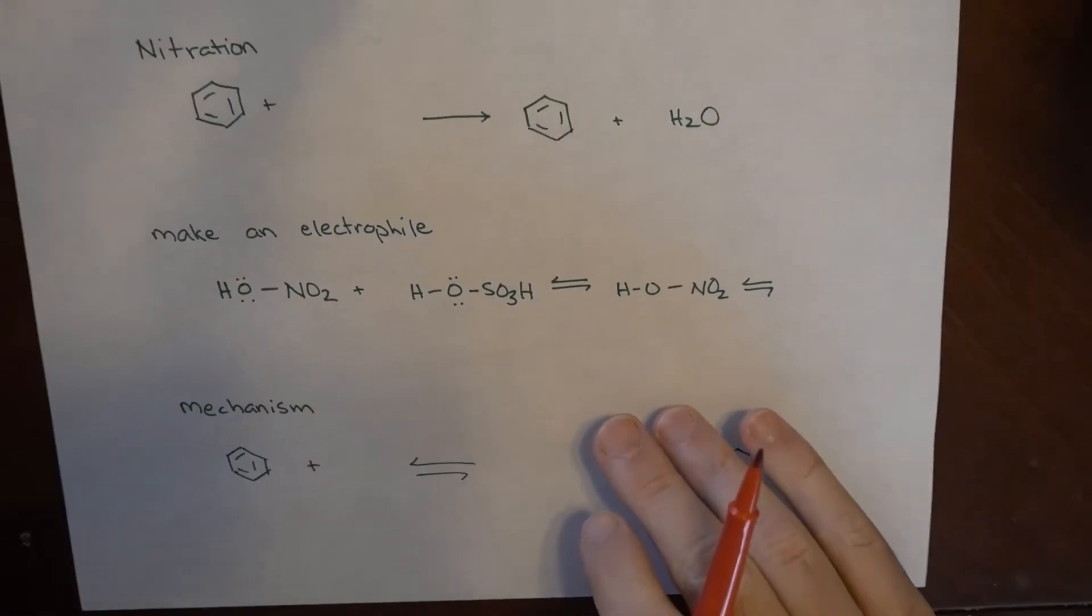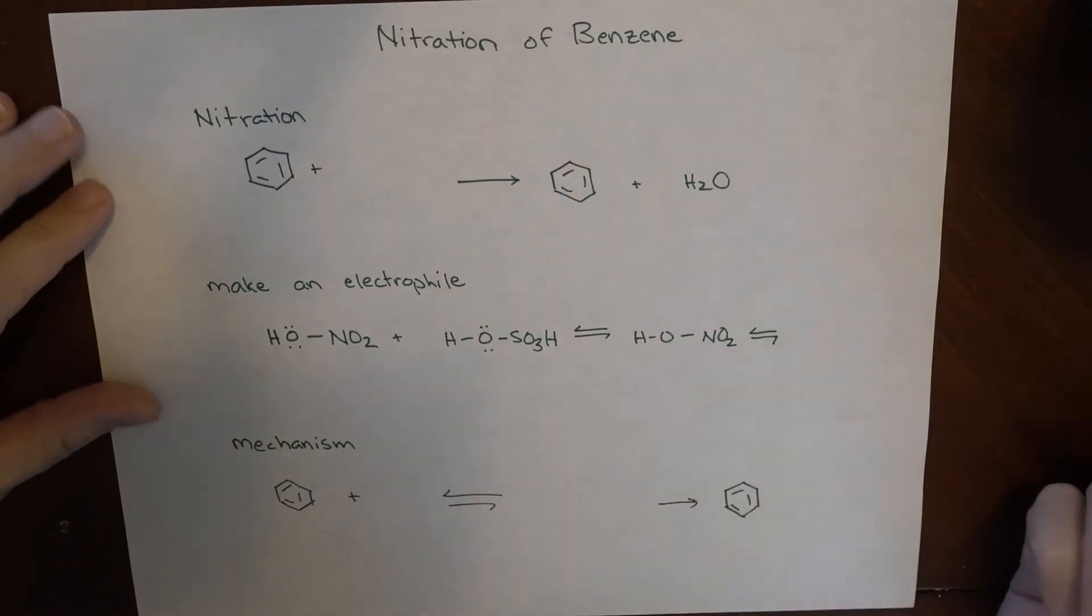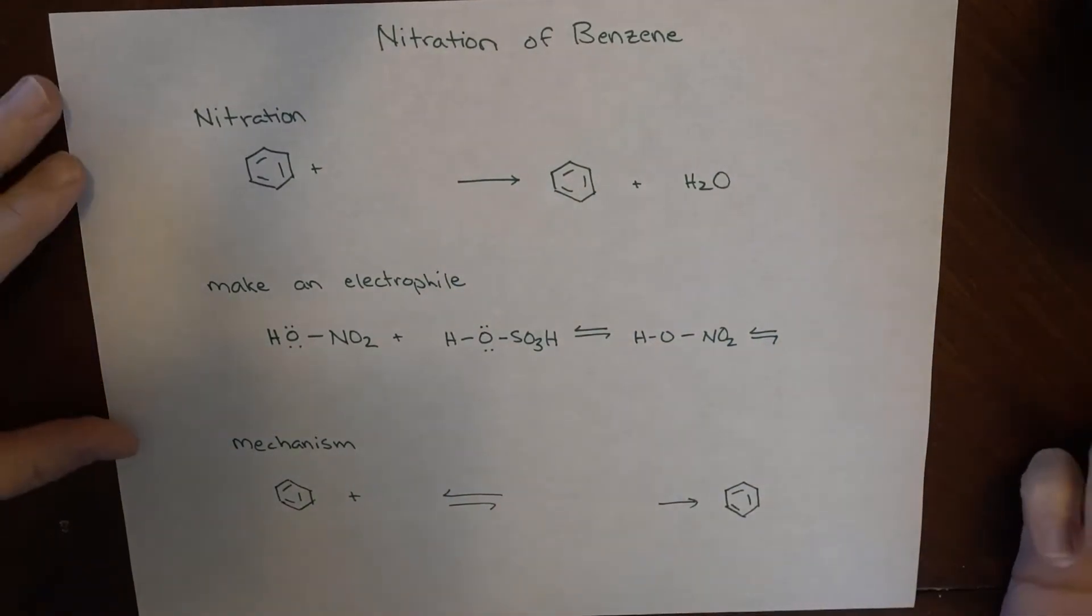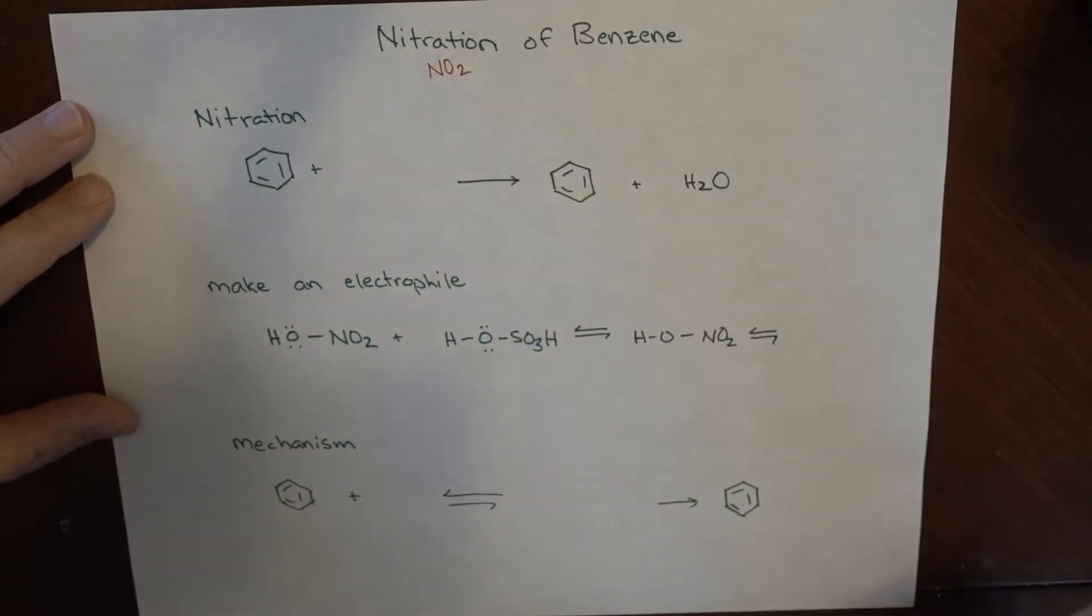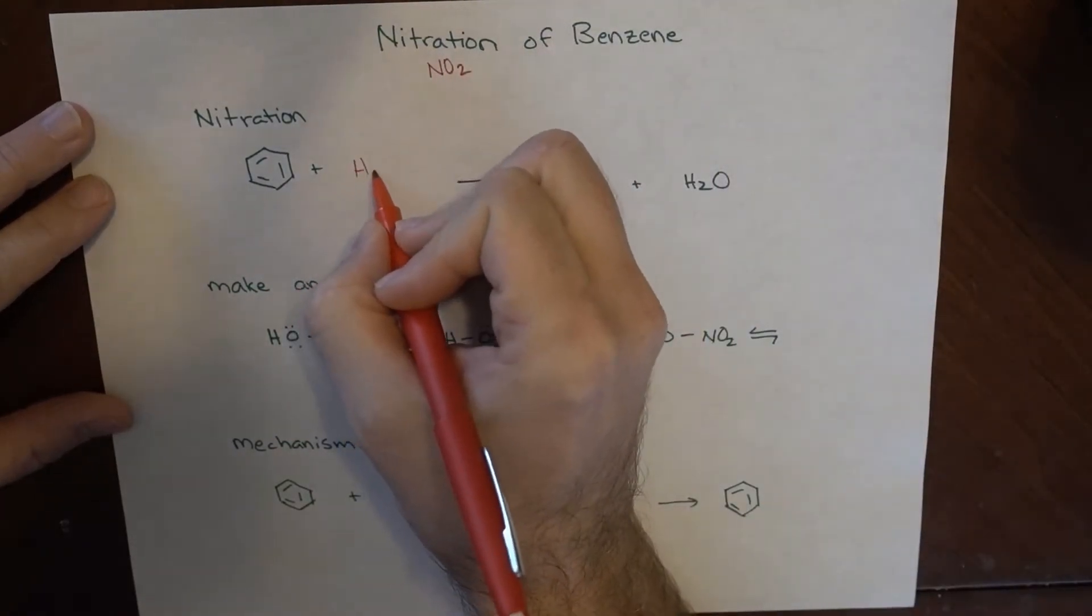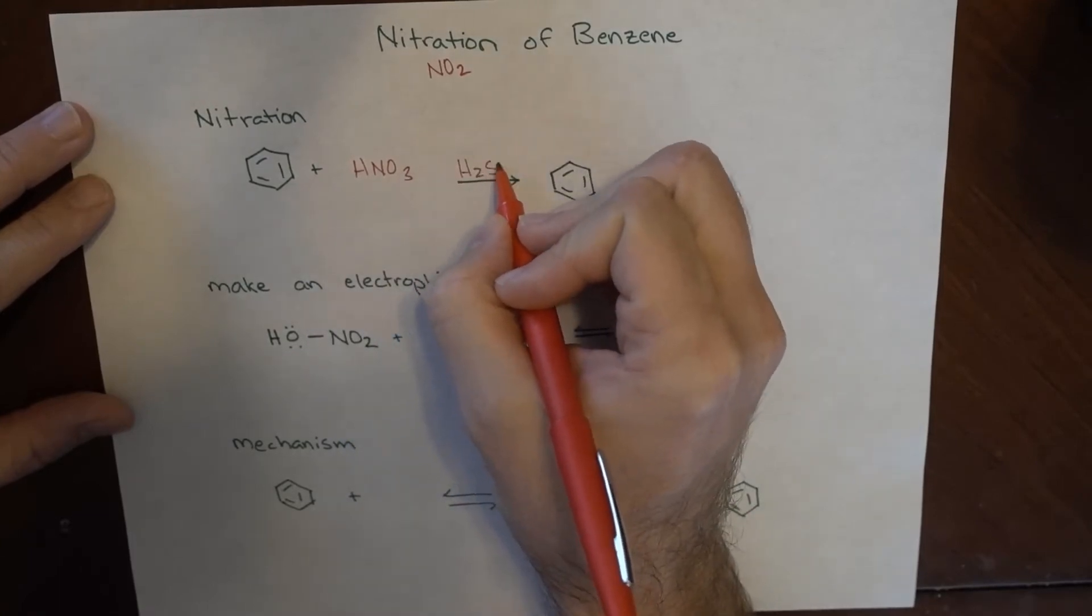One of the reactions available to us is the nitration of benzene. That's one of the things we can put onto a benzene ring. We're going to add an NO2 group, and the way we do that is with nitric acid and H2SO4.